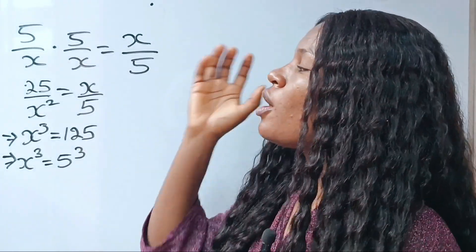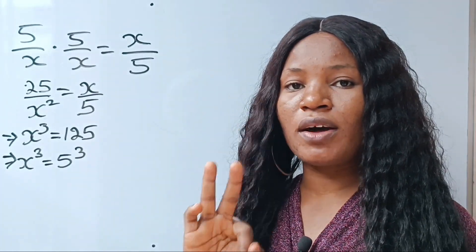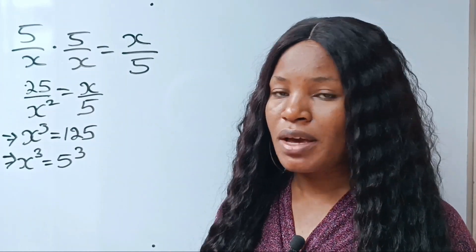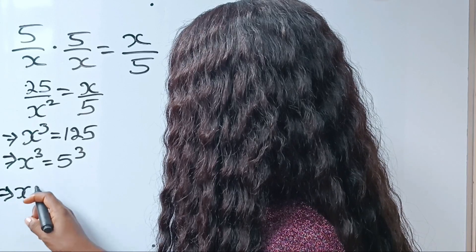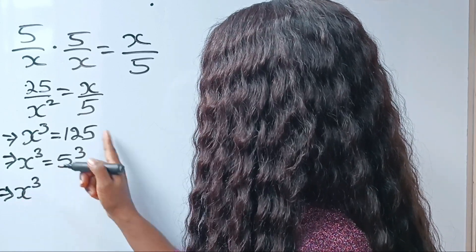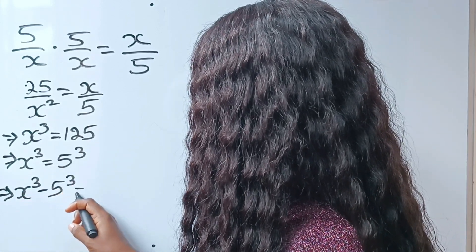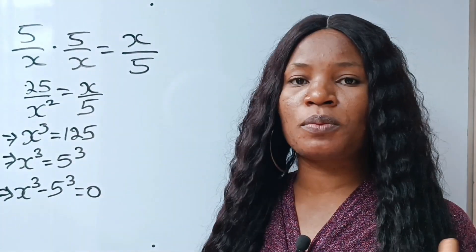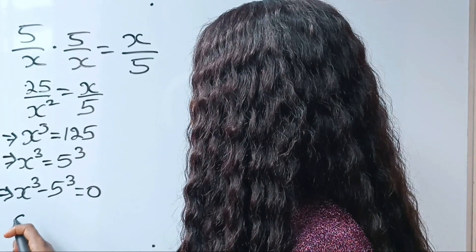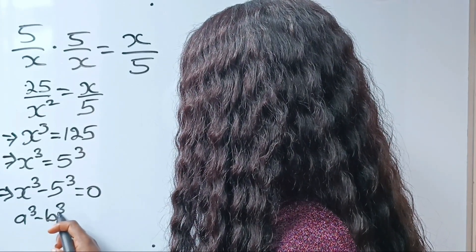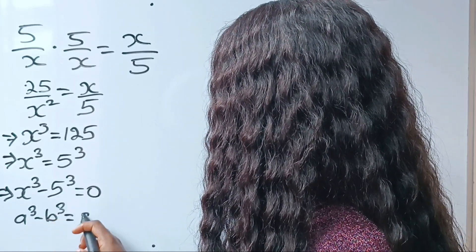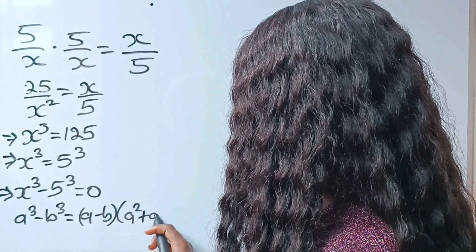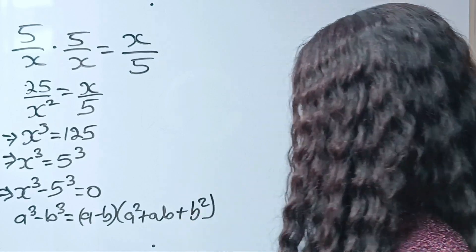But if we just equate it that way, we won't be able to get the remaining two values. So in order to get the remaining two values, we are going to apply this method. This implies that x to the power of 3 minus 5 to the power of 3 is equal to 0. Now we are going to apply our algebraic identity, which states that a to the power of 3 minus b to the power of 3 is equal to a minus b, multiplied by a squared plus ab plus b squared.